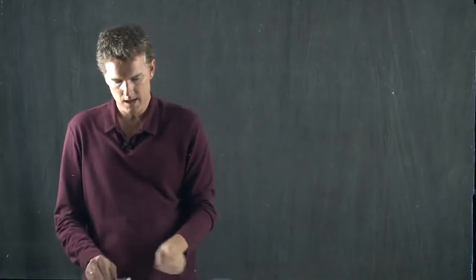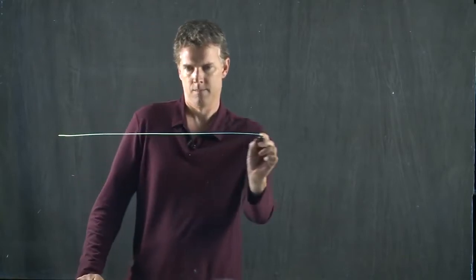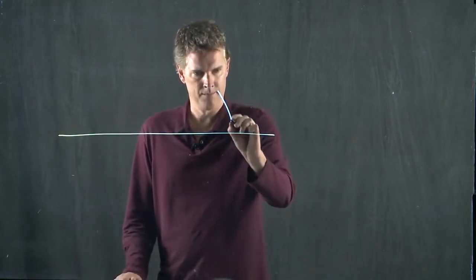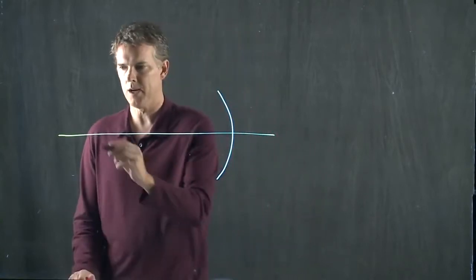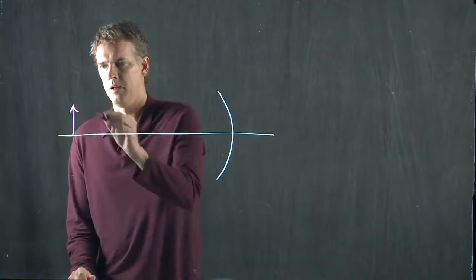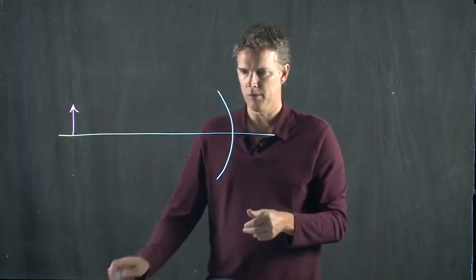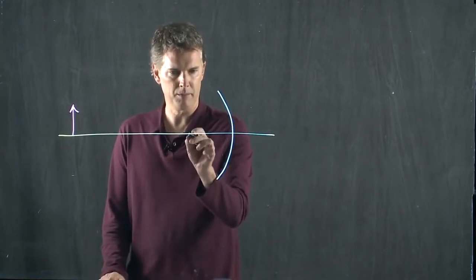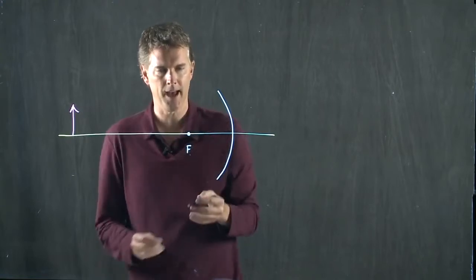So let's draw an optic axis, and let's put our spherical mirror right there. And now let's take an object, and we'll put the object right there. The spherical mirror, of course, has a focal point. If the center is there for the spherical mirror, then the focal point is somewhere around there. We'll label that F.